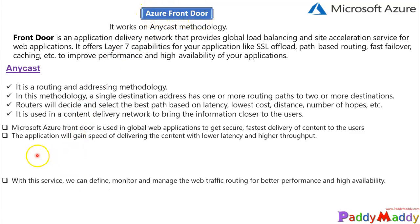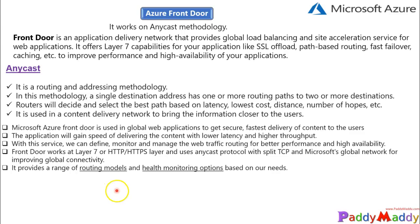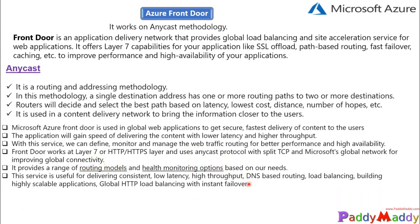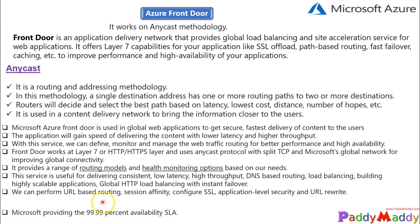Azure Front Door provides a global web application secure and faster delivery network, gaining speed of content delivery with low latency. It uses Layer 7 for HTTP and HTTPS, backed by the anycast methodology. It also provides a range of routing models and health monitoring options. Security options include session affinity, SSL configuration, and application-level security.